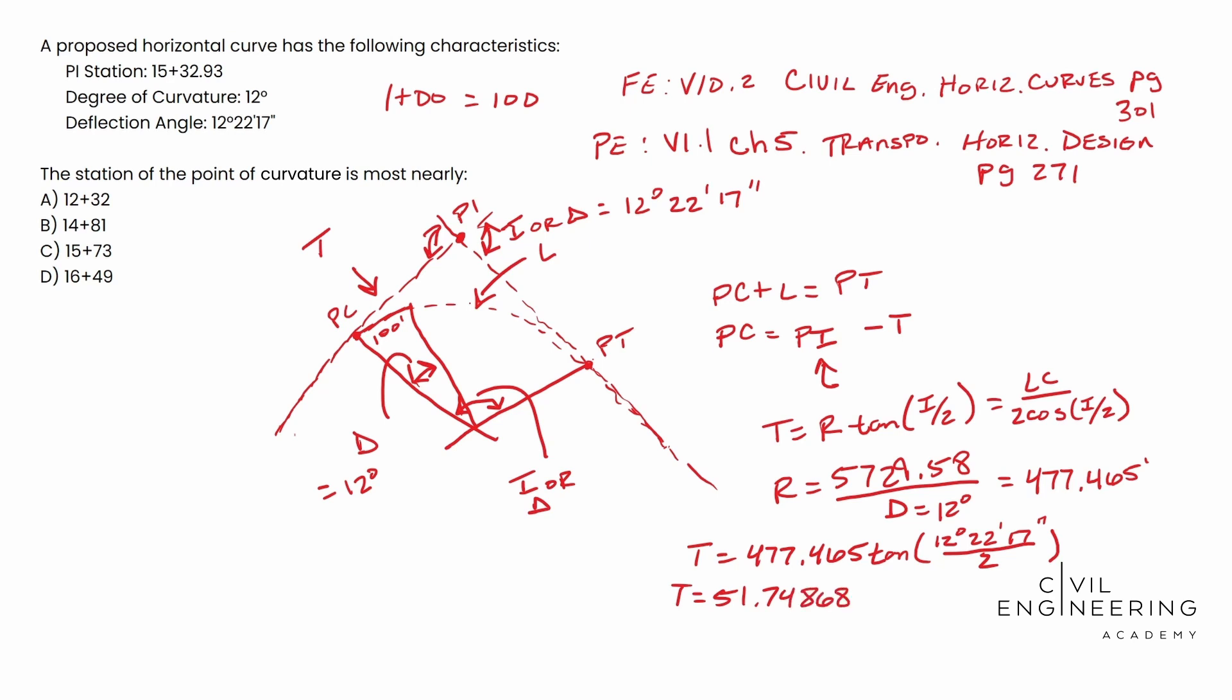And so now that we have this T value, that 51.74868, we can actually plug that into our original equation right here. This PC equals PI minus T. We can plug that in. So PC, that's what we're solving for is equal to the PI. So the station of the PI in the problem is 15 plus 32.93. And then we subtract out that T value that we solved for, and that's going to be 51.74868.